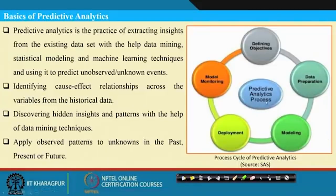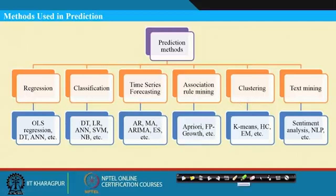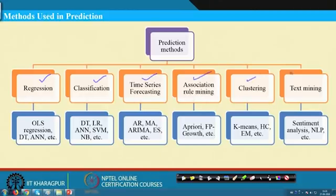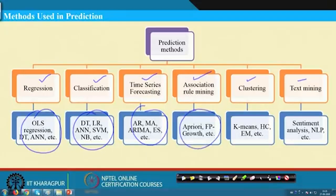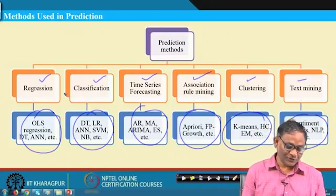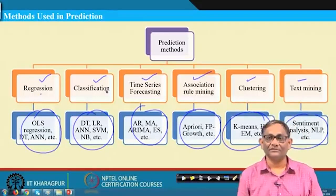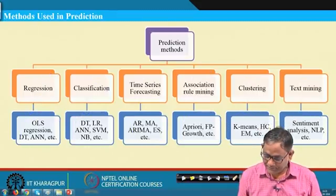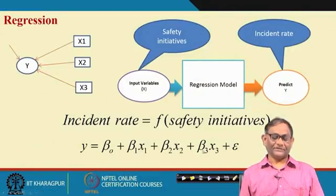Let us look at the different prediction methods. There are a large number of methods under different groups: regression, classification, time series forecasting, association rule mining, clustering, and text mining. Under each group, there are specific techniques. We will not be able to cover all of them, but any one class of techniques can be useful. Today I will discuss regression and also classification.